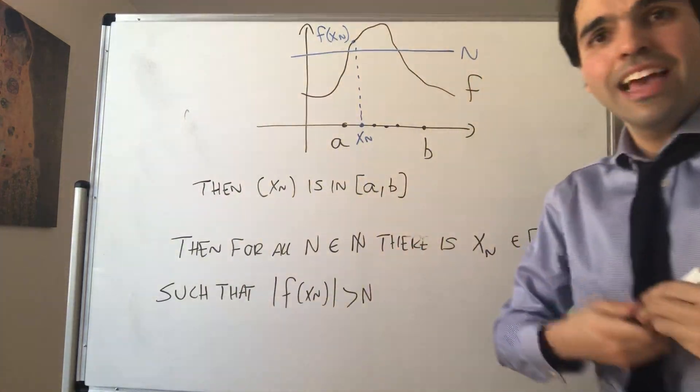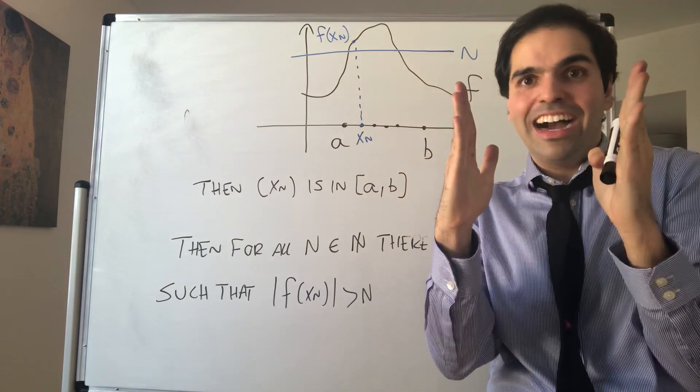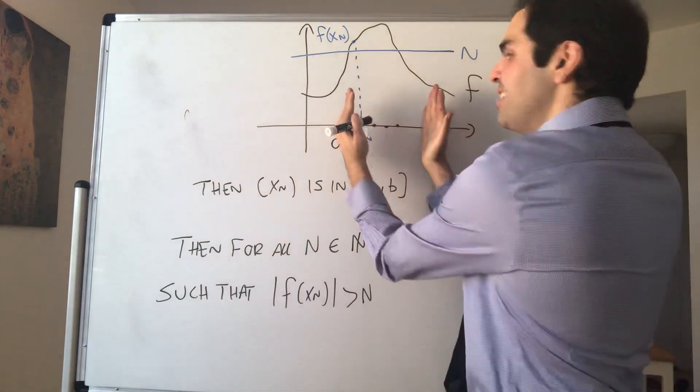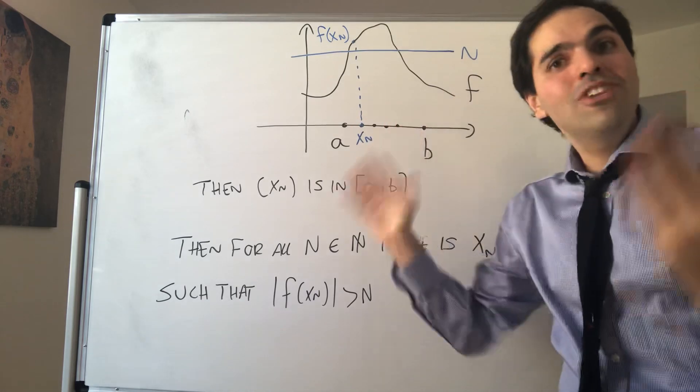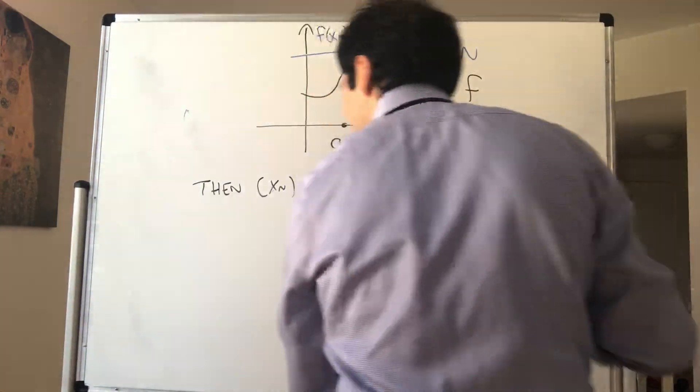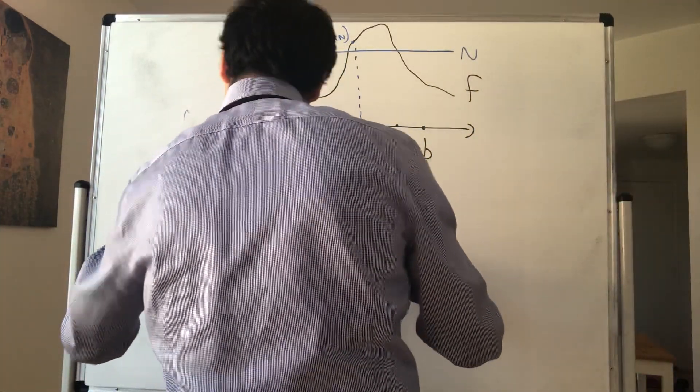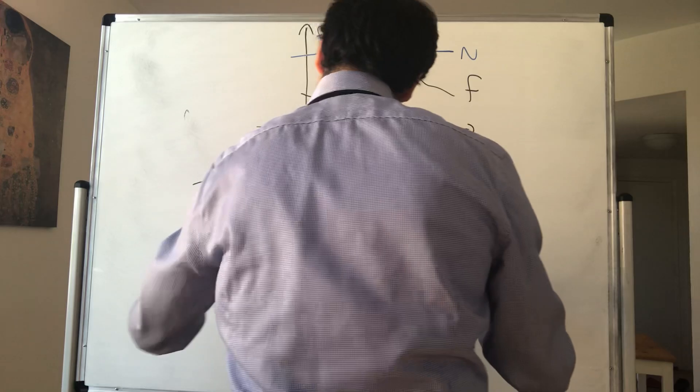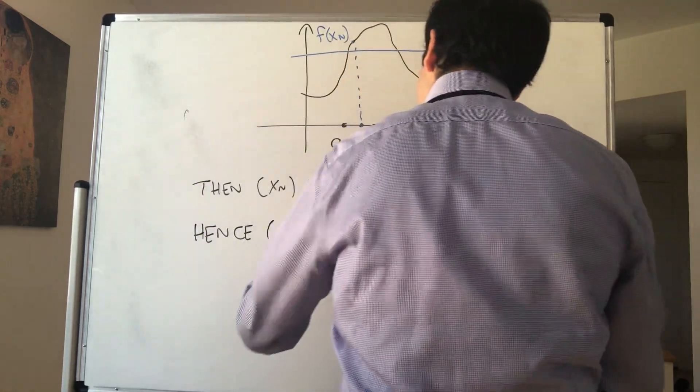But here's the thing: [a,b] is finite. So in particular, the sequence itself is bounded. It cannot just shoot off to infinity. So hence, xₙ is bounded.